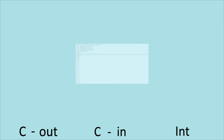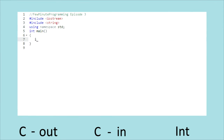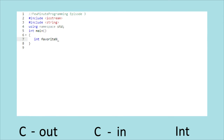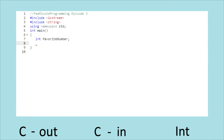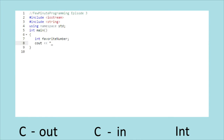Our next program is a little more advanced because it uses cout, cin, and int all together. This program is going to ask us for our favorite number, so we're gonna use int to let the computer hold that number for us. Now, using what we learned before, we're going to cout a question asking us for our favorite number.